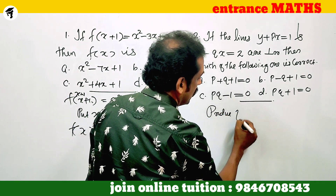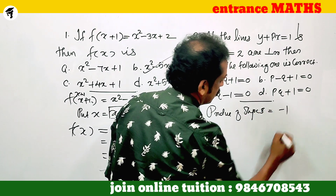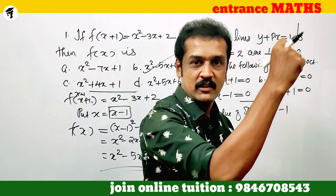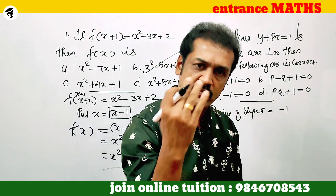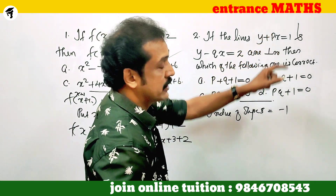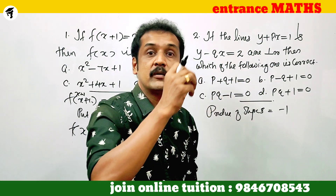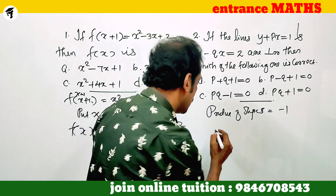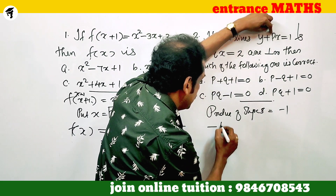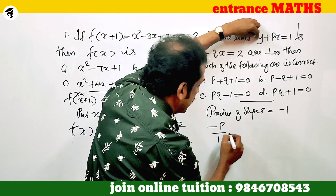The condition for perpendicular lines is that the product of their slopes equals minus 1. The slope of each line is calculated as minus coefficient of x divided by coefficient of y. For the first line, the coefficient of x is p and coefficient of y is 1. For the second line, the coefficient of x is minus p and coefficient of y is 1, giving slope minus 2.